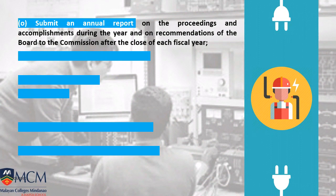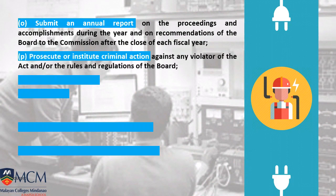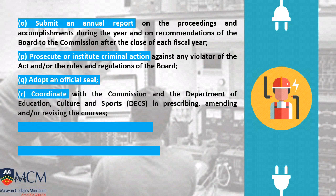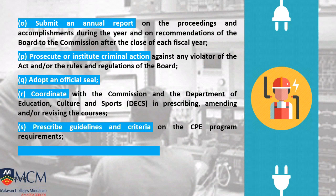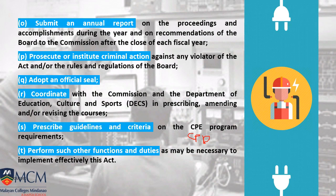Electrical engineers have a national organization, the IIEE, and every year there is an annual national convention. The board submits an annual report on proceedings and accomplishments so all electrical engineers in the Philippines are aware of professional developments. The board also prosecutes criminal actions, adopts an official seal used by PEEs, coordinates with the Commission and the Department of Education, and prescribes guidelines and criteria for the CPD — Continuing Professional Development — program requirements. You earn CPD units before renewing your license.